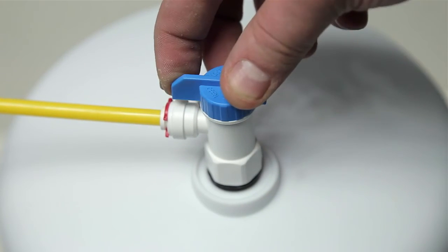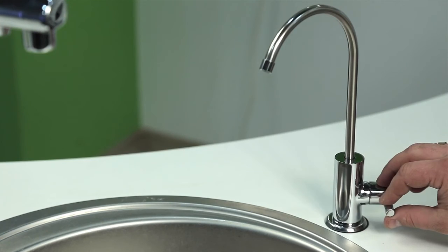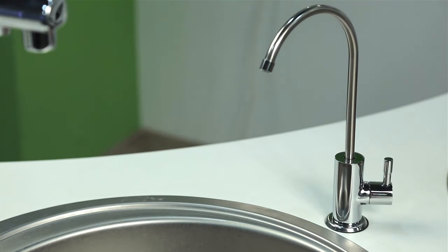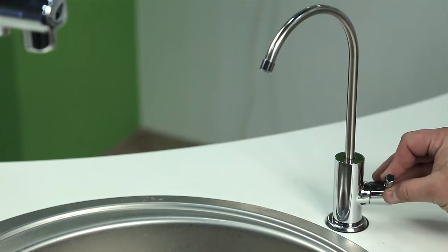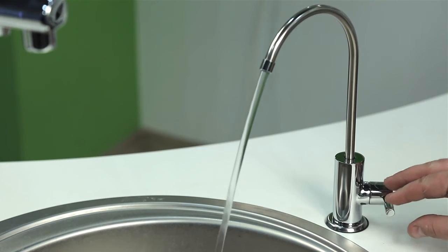Then open the tank valve. Close the faucet and carefully check all connections for leaks. After the water tank is filled, you will hear the water stop flowing. Drain all water from the tank by opening the faucet.